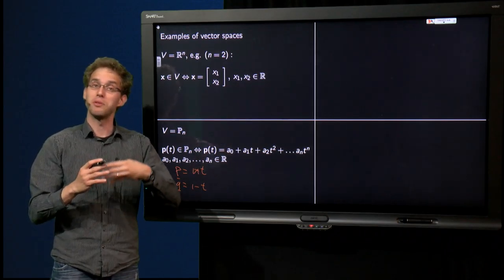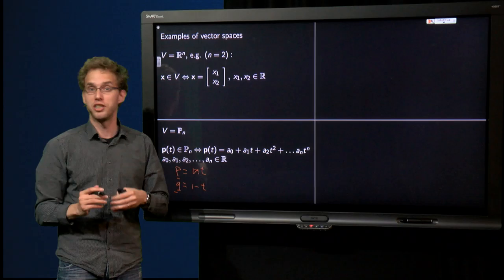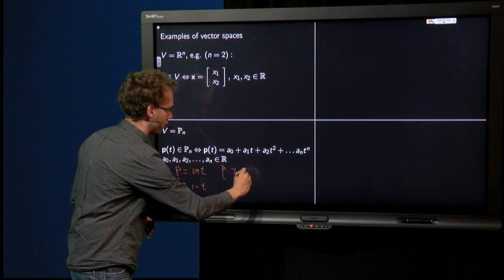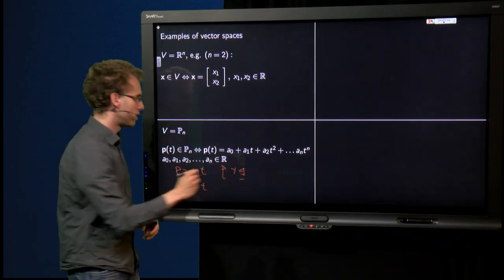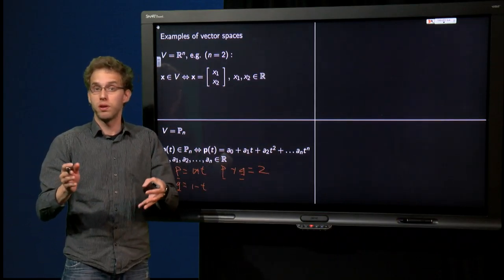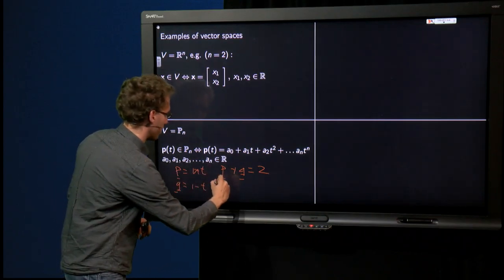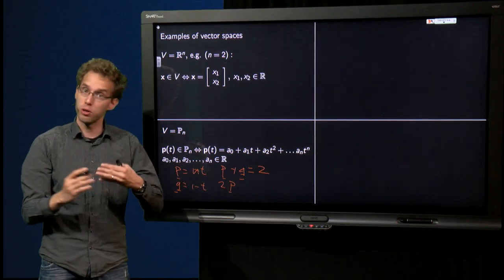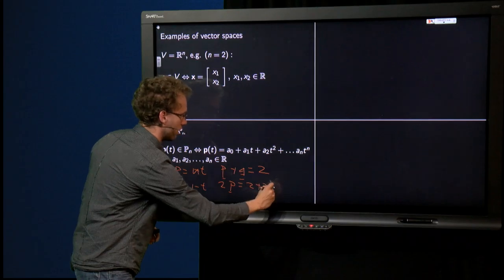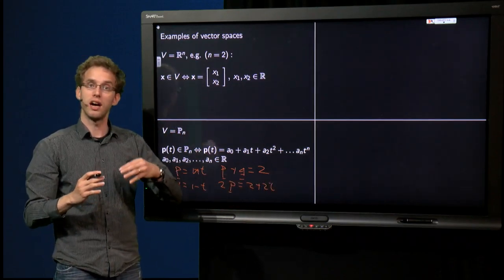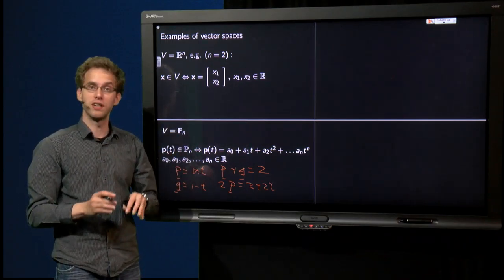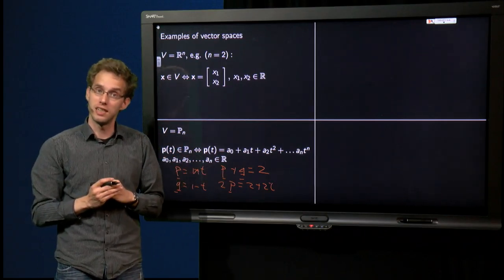Now, we have to be able to add them and to multiply them with a scalar and still get a new polynomial. P plus Q, you just add them like you add functions pointwise, so that equals 1 plus t plus 1 minus t, is the function which is everywhere 2, also a polynomial with one degree lower. And 2 times P, you also multiply pointwise, so you get 2 plus 2t, which is again a polynomial. That's how you add and multiply them. I can check that all 10 properties which need to be satisfied are all satisfied also for this vector space.